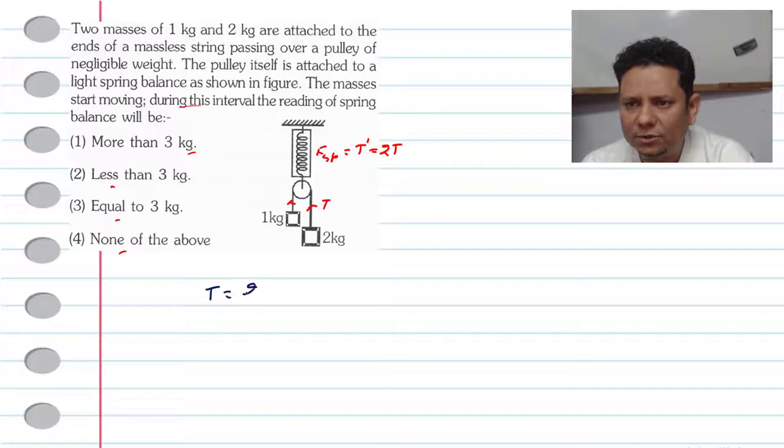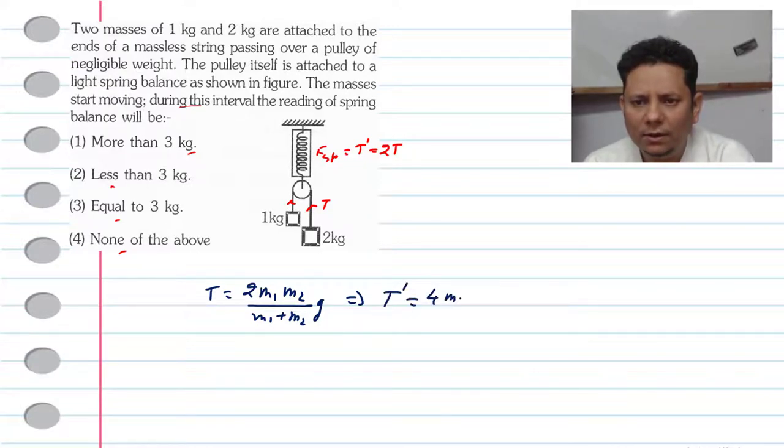The tension value here is twice M1M2 divided by M1 plus M2 G. If we keep the value here, T' will be equal to 4M1M2 divided by M1 plus M2 G.